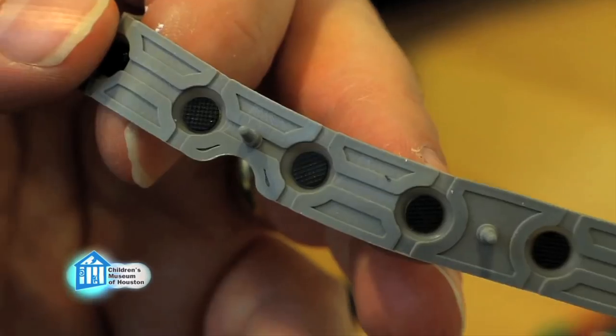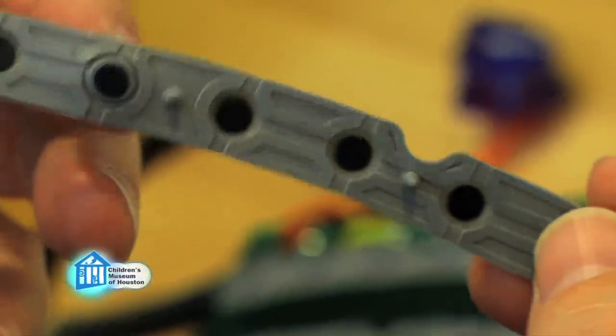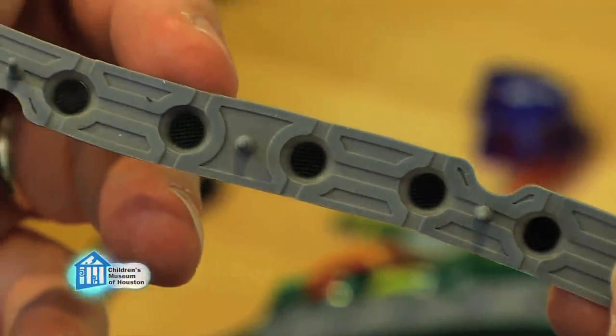So what you see along these strips, all these little things here, these are just little conductive pads that cause the buttons to activate.